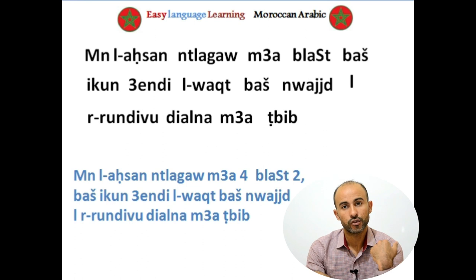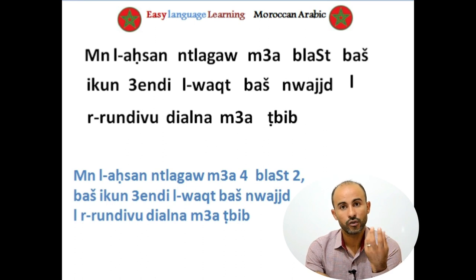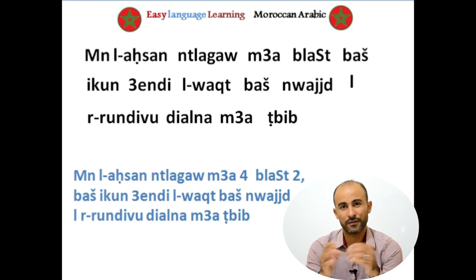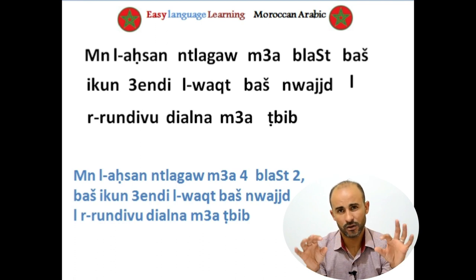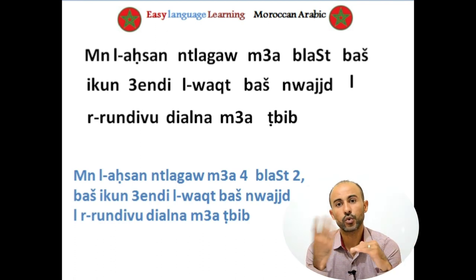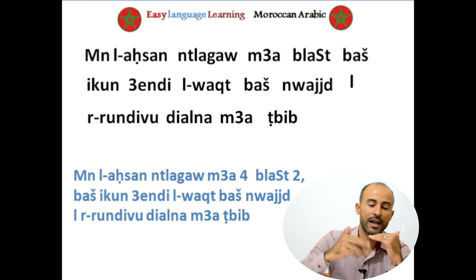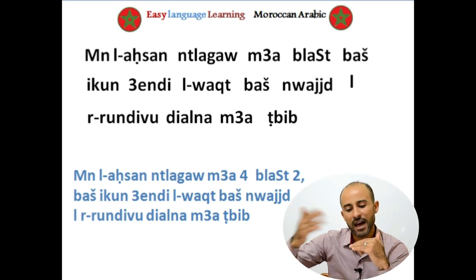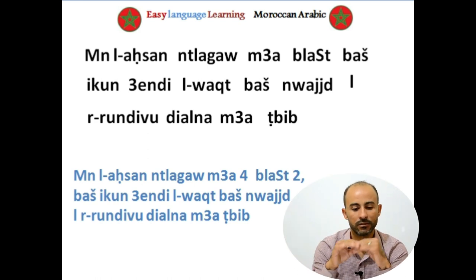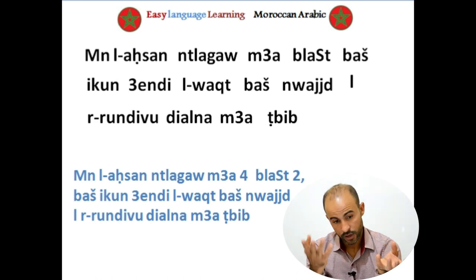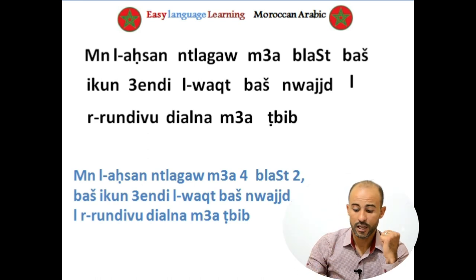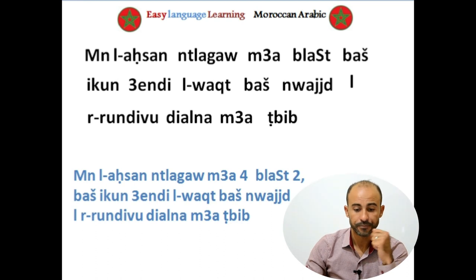يكون means 'to be' or 'to have.' The whole expression يكون عندي الوقت means 'in order that I have time' — or 'I will be having time.' So باش يكون عندي الوقت means 'so that I have time.'